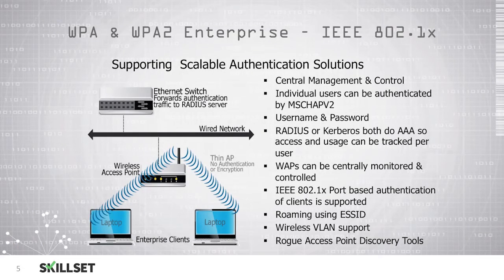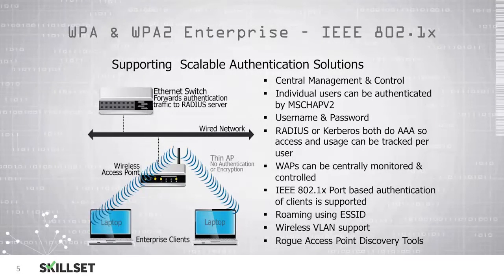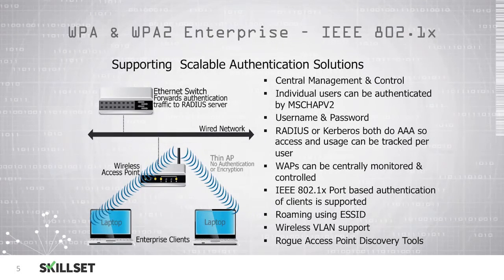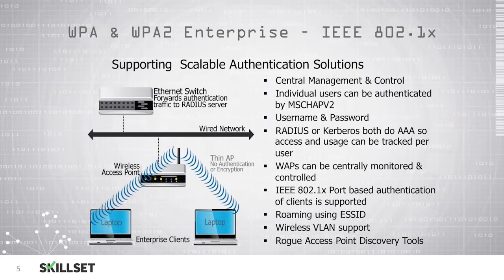You can also roam throughout a large building or facility using ESSID, or Extended Service Set Identifier, which prevents employees from having to repeatedly log on as they move between buildings across a campus. The technology supports wireless VLANs, or virtual local area networks, so you can segregate clients based on their need to access different resources. These devices also support rogue access point discovery, so you can determine if an individual plugs in an unauthorized access point on your network.